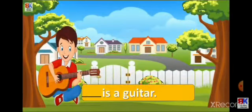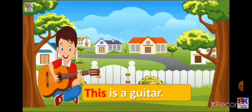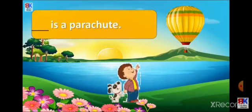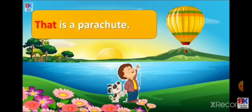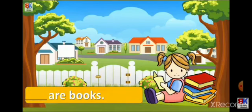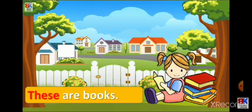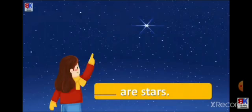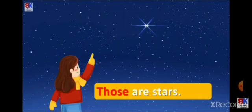Now more examples. 'What is this? ___ is a guitar.' One guitar is there and it is near, so: 'This is a guitar'. If things are far away — '___ is a parachute, it is so far away' — so: 'That is a parachute'. Now, 'What is this? Books — many books are there', so: 'These are books' — near and many, use 'these'. And for far away stars: 'Those are stars' — things are many and far away, use 'those'.